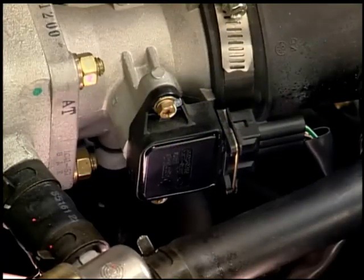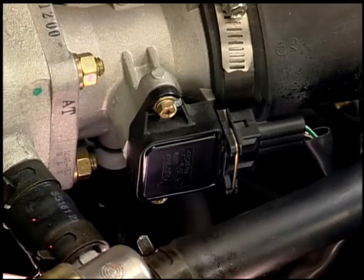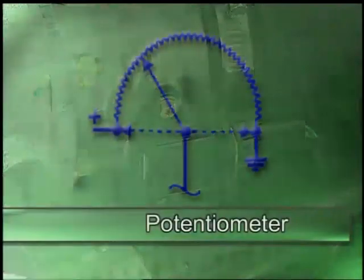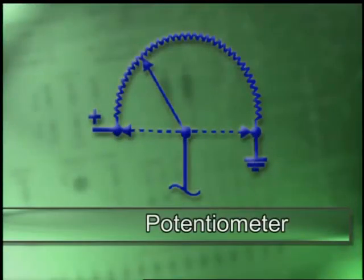Potentiometers measure the change in voltage based on the position of a sensing needle on a variable resistance scale. The symbol for a potentiometer is that of a variable resistor with a vertical line from the lower center of the box to the center of the resistor.